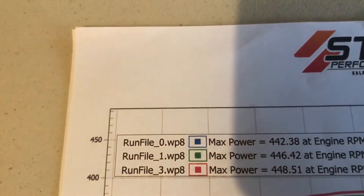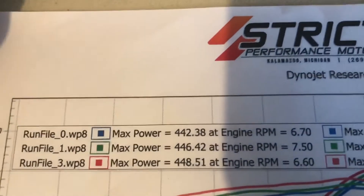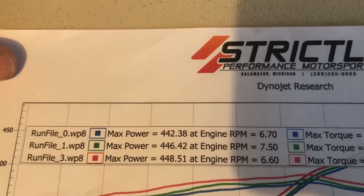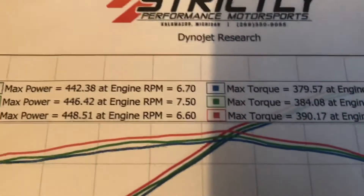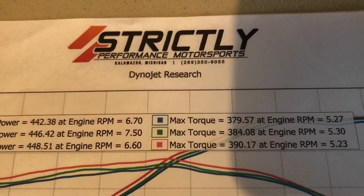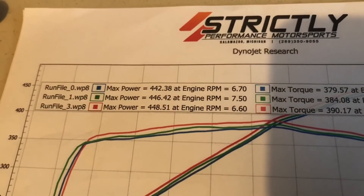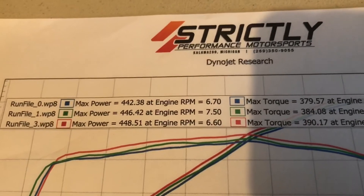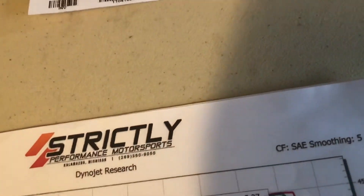On the very first run we got 442.38 rear wheel horsepower at 7,600 RPM, with max torque of 379.57. The second run, a few minutes later, we ran 446.42 at 7,500 RPM with max torque of 384.